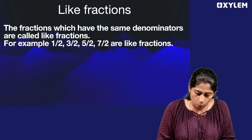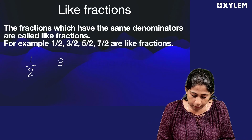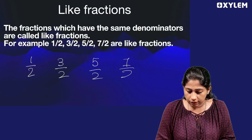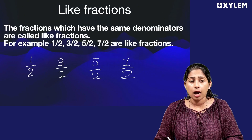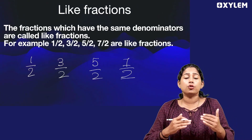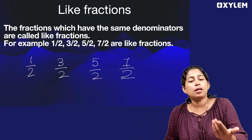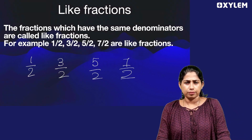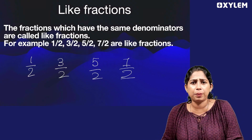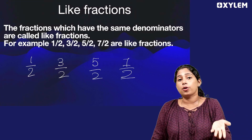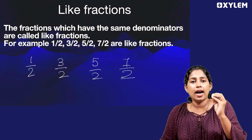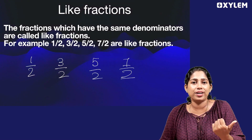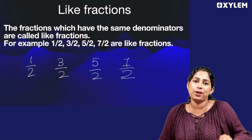For example: 1 by 2, 3 by 2, 5 by 2, 7 by 2. They all have the same denominator. So we have a simple concept of like fractions.